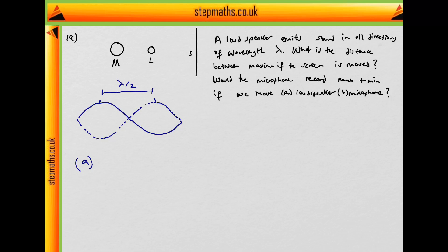Now for the next part of the question, we're told that the screen is no longer moved. We're asked: would the microphone record maxima and minima if we moved A, the loudspeaker, and B, the microphone?